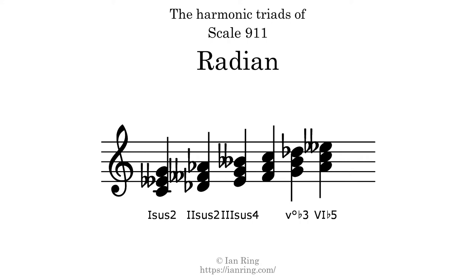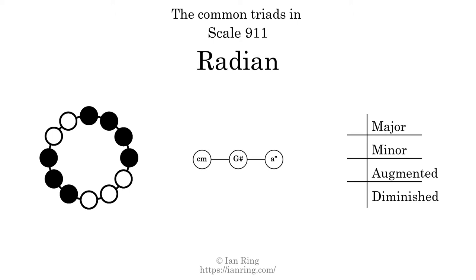Here are the common triads present in this scale. The diagram in the center is a graph of parsimonious voice leading between triads. There is one major triad, one minor triad, no augmented triads, and one diminished triad. Here is a Hamiltonian path of parsimonious voice leading that uses all the triads.